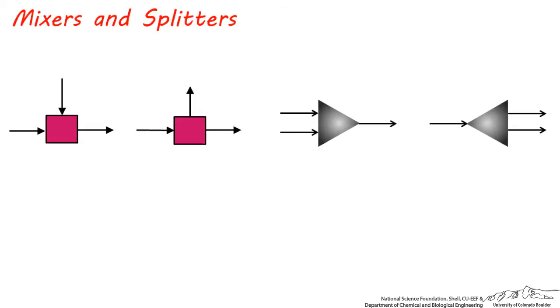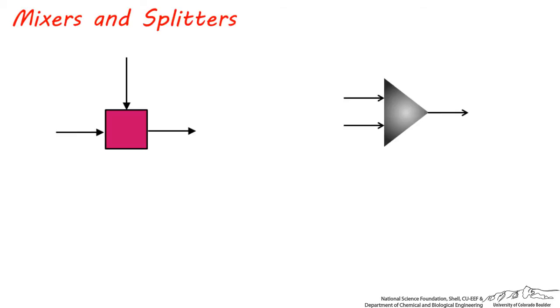These are mixers and splitters, and you'll see these frequently in ChemCAD and Aspen. This is a typical stream mixer used in ChemCAD, and this is one used in Aspen.